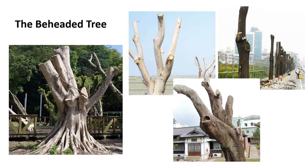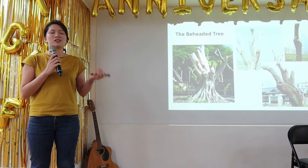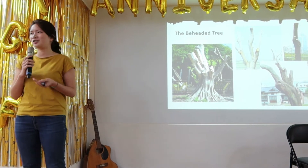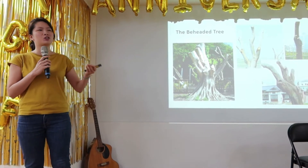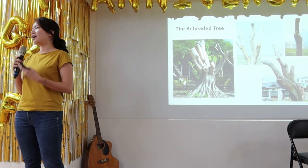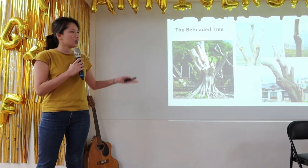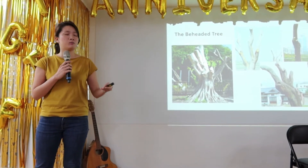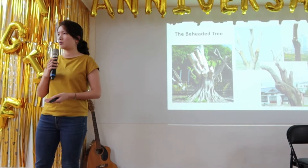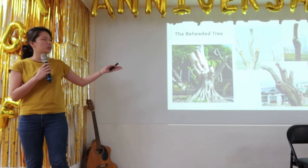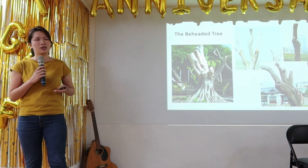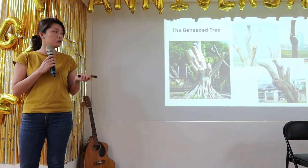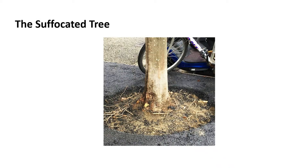The second mistake: the beheaded tree. They look really pathetic but they're in our everyday lives. A lot of us are just tired of picking up fallen leaves, or we're afraid that if the trees grow too big and too tall they'll block our view, so we just behead the trees. But these trees will grow new bark and new branches — the problem is those new branches are easier to fall than the main branches that have been chopped off, so these trees are also more likely to fall.